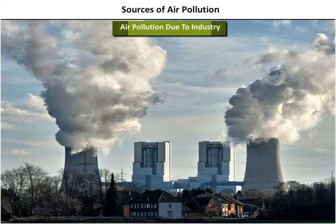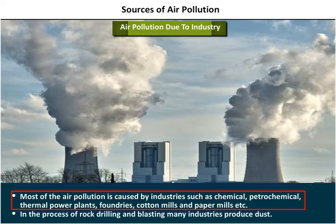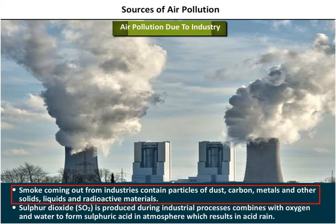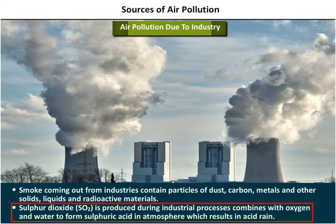Air Pollution Due to Industry: Most air pollution is caused by industries such as chemical, petrochemical, thermal power plants, foundries, cotton mills, and paper mills. In the process of rock drilling and blasting, many industries produce dust. Smoke coming out from industries contains particles of dust, carbon, metals and other solids, liquids, and radioactive materials. Sulfur dioxide (SO2) is produced during industrial processes and combines with oxygen and water to form sulfuric acid in the atmosphere, which results in acid rain.